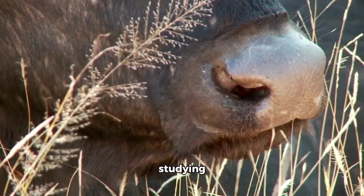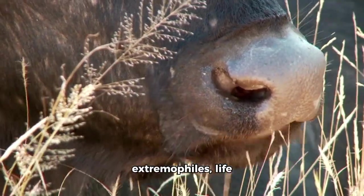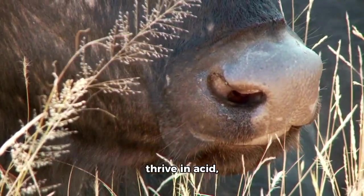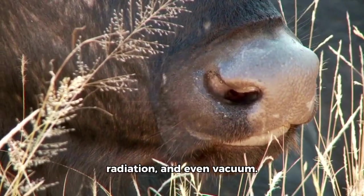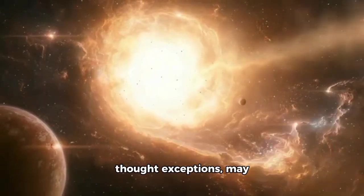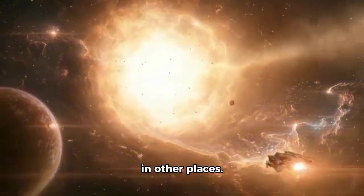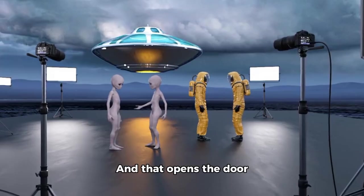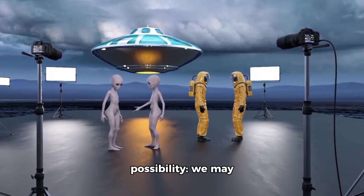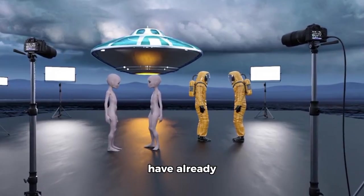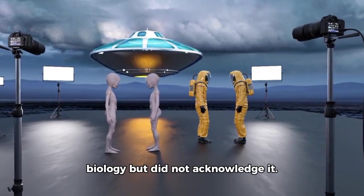Biochemists are now studying extremophiles, life forms on Earth that thrive in acid, radiation, and even vacuum. These organisms, once thought exceptions, may now serve as examples for how life can develop in other places. And that opens the door to an awful possibility. We may have already encountered alien biology but did not acknowledge it.